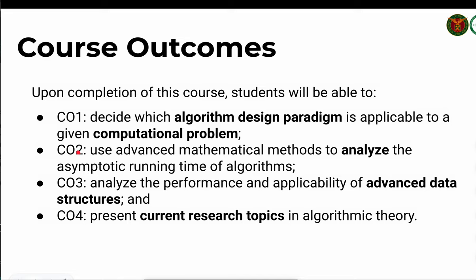Course outcome number two is that upon completion of this course, you should be able to use advanced mathematical methods to analyze the asymptotic running time of algorithms. In your prerequisite courses, you learned about running time and asymptotic notations like big O, small O, omega, and average case analysis. For this course, we will introduce more types of analysis beyond running time — how we can assess how good an algorithm is in terms of other complexity measures.